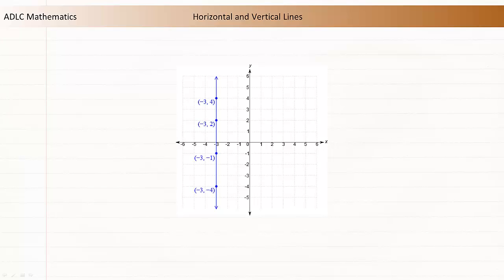Let's take a look at vertical lines. This line includes the points negative 3 comma 4, negative 3 comma 2, negative 3 comma negative 1, negative 3 comma negative 4, as well as many others.